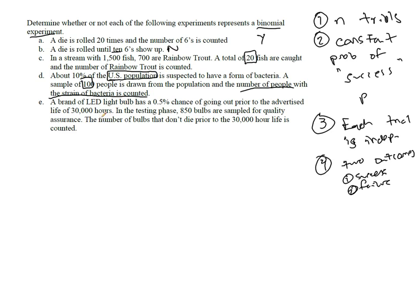We have a brand of LED light bulb, and it has a 0.5 chance of going out prior—oh, so back here we'd say this is yes, this is no. A brand of LED light bulb has a 0.5 chance of going out prior to the advertised life of 30,000 hours. In the testing phase, 850 bulbs are sampled for quality assurance. The number of bulbs that don't die prior to the 30,000 hours of life is counted.